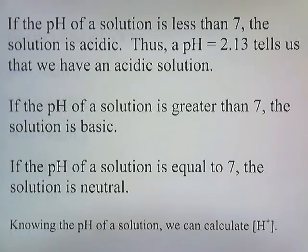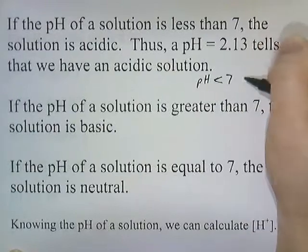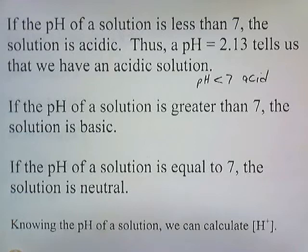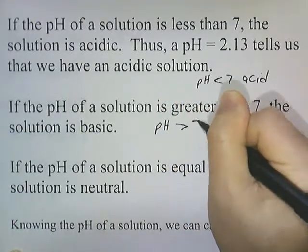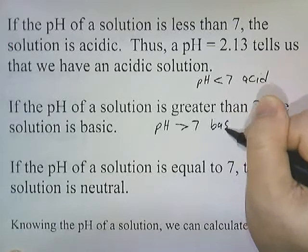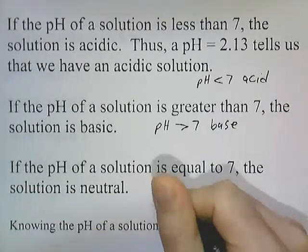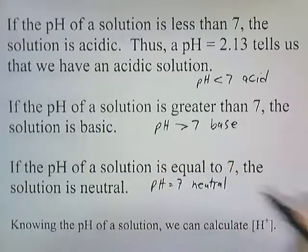If the pH of a solution is less than 7, the solution is acidic — a pH of 2.13 tells us we have an acidic solution. If the pH is greater than 7, the solution is basic. If the pH equals 7, the solution is neutral: neither acid nor base.